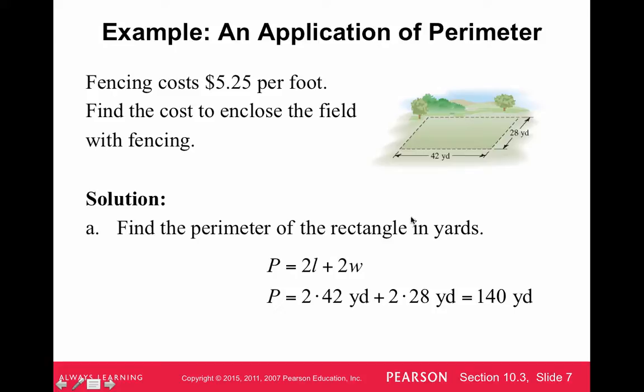So we have two times 42, the two 42s, plus the two 28s, and I'm not sure why they're writing yards in the middle of the problem. I never do that. I just write the unit at the end. So you multiply these by two and add them up and you get a 140-yard perimeter.